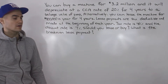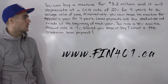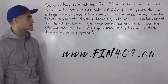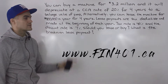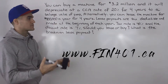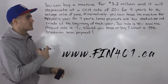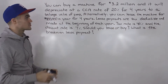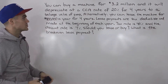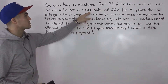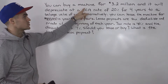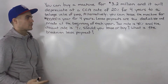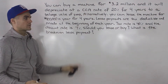Welcome back everybody. Patrick here, moving on with leasing timing differences. We're going to do another example — the same scenario that we did before, only this time instead of straight line depreciation, we're going to be depreciating this machine at a CCA rate of 20%.